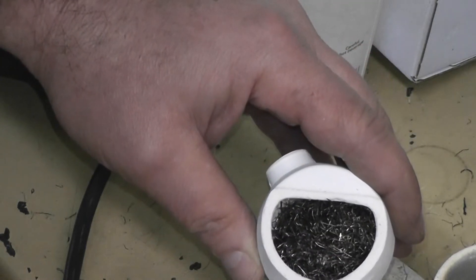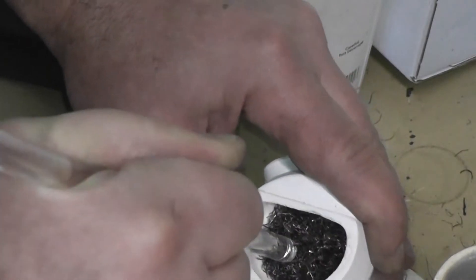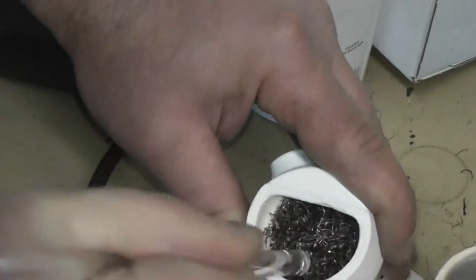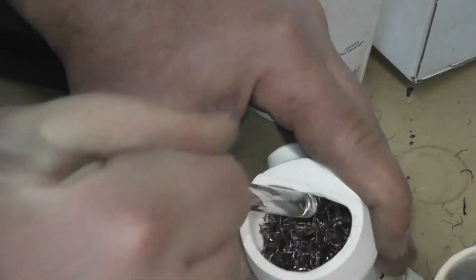We load the crucible with 40 grams of the shredded wire and we work with a quartz rod or a screwdriver, whatever you want to use, to compress this material as much as you possibly can within the crucible.